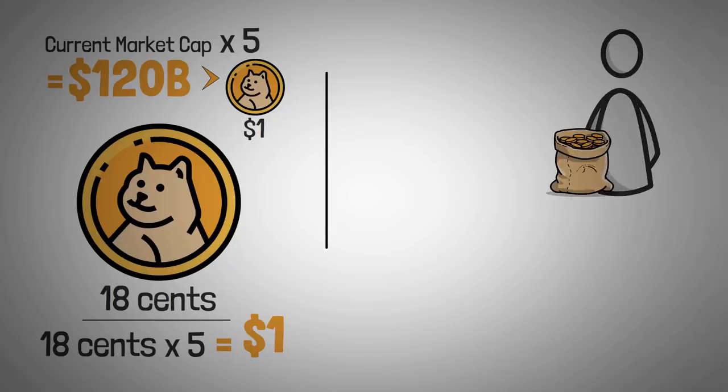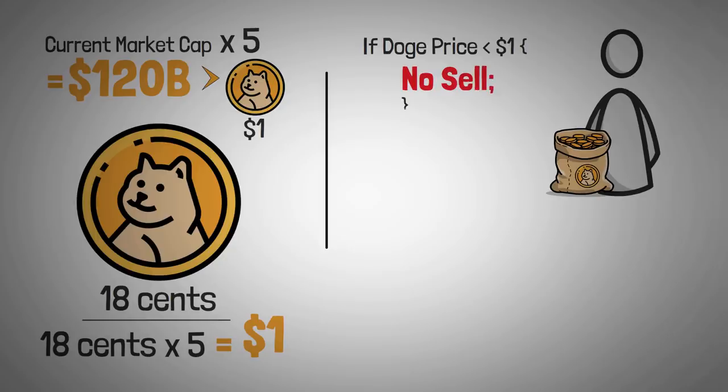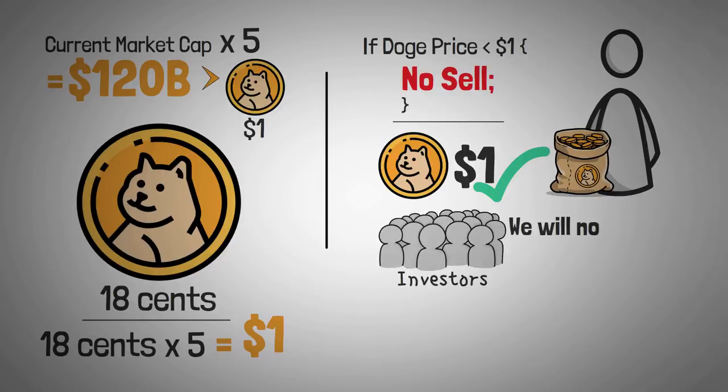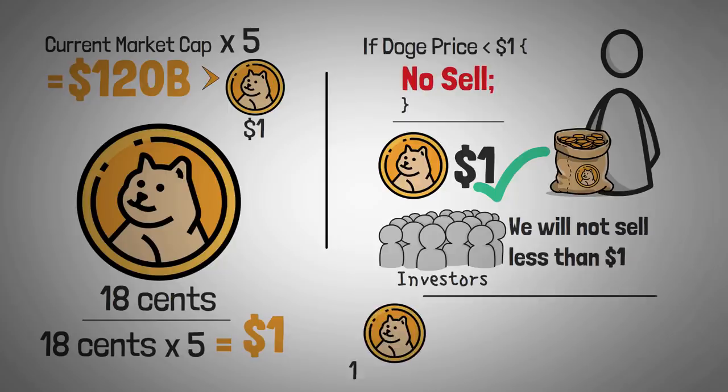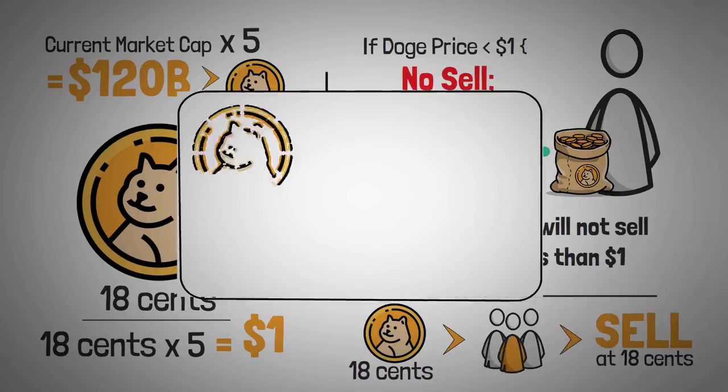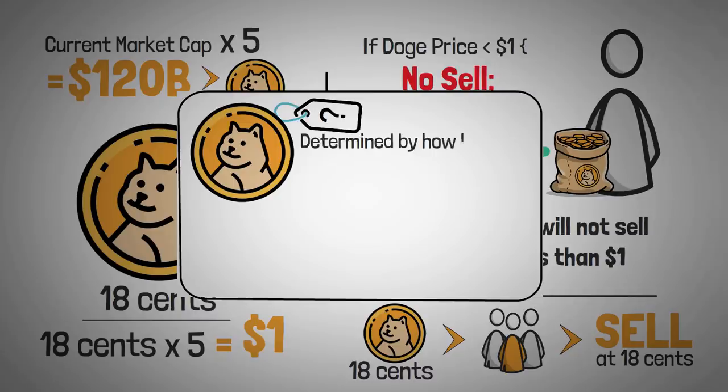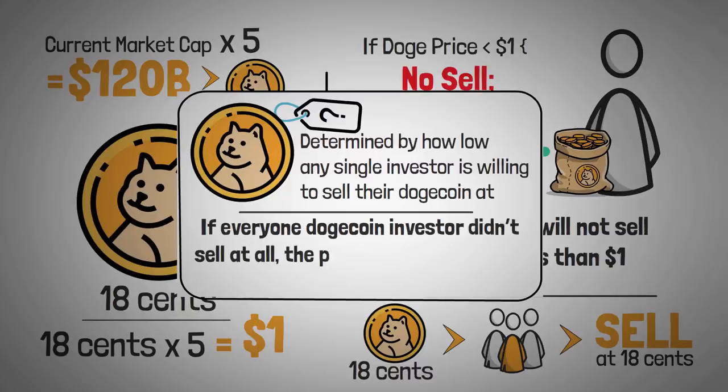In fact, if every Dogecoin holder in the world had really strict morals and said I am no longer going to be selling my Dogecoin below $1, and everyone did this, well, now the price is at a dollar. Technically, the price could go to a dollar without any more money flowing into the project, but all the investors would have to work together to pull it off. The price is determined by how low any single investor is willing to sell their Dogecoin at.